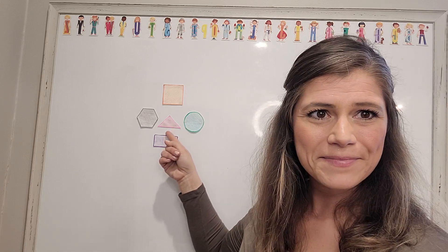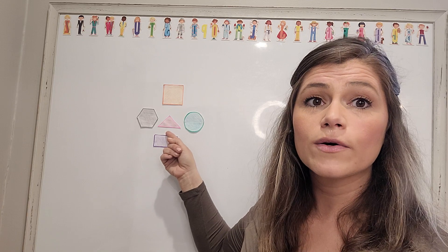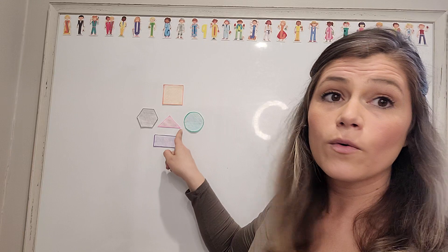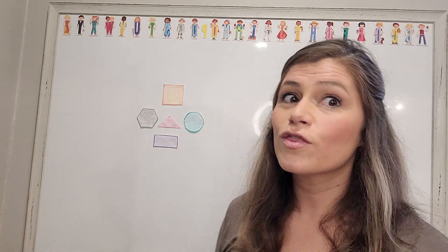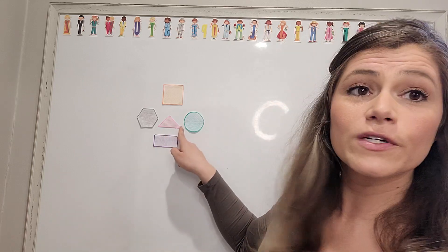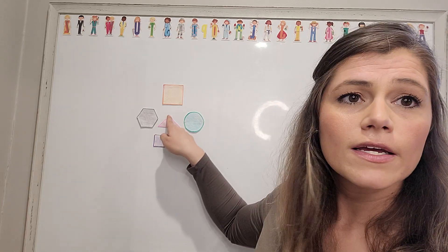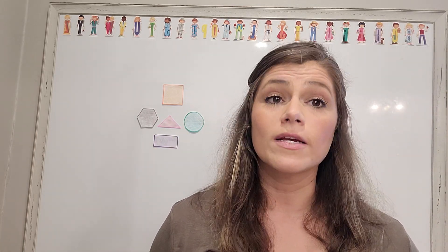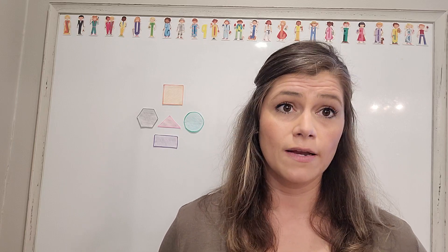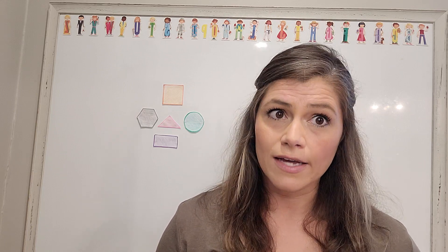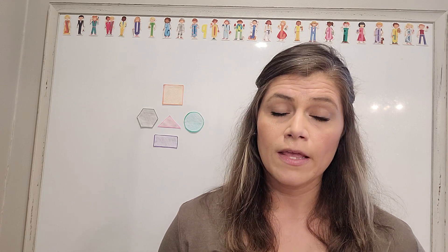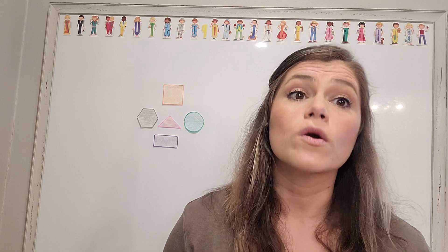We have one more shape. What's its name? A triangle. A triangle has three sides — let's count: one, two, three. It also has three corners or vertices: one, two, three. A triangle always has three angles or vertices and three sides.